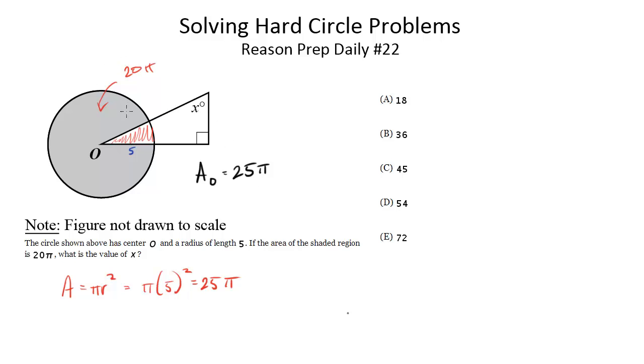But what does that tell us? Well, that tells us that since the area of the shaded region is 20π, the area of this wedge must be 5π. And here is the key insight. If the area of the wedge is 5π and the area of the entire circle is 25π, we now know what fraction of the circle this wedge represents.